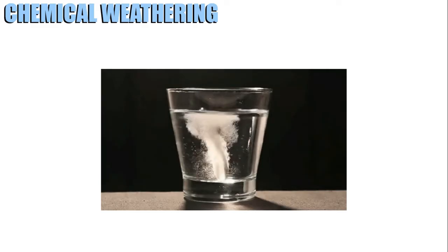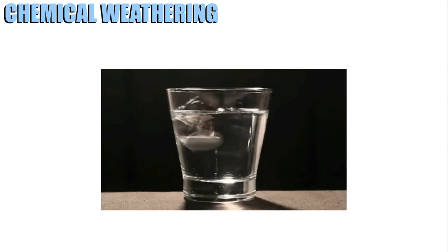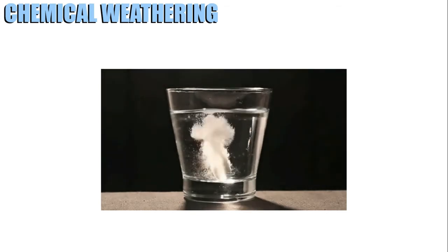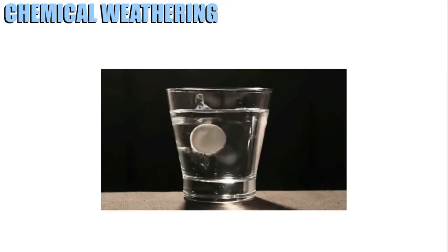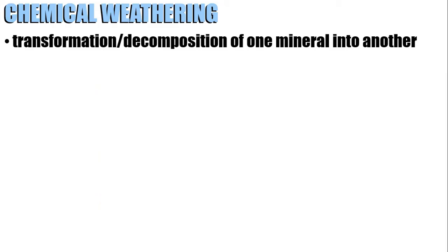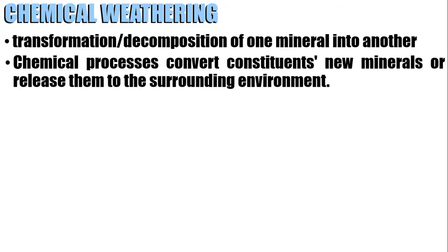Now let's go to chemical weathering. Going back to the tablet analogy — when you dissolve the tablet in water or an aqueous solution, the tablet reacts with water, yielding other substances. Similarly, when rocks undergo chemical weathering, they produce other substances. Chemical weathering is the transformation of one mineral into another. They are chemical processes which convert constituents into new material or release them to the surrounding. Take note that water is the most important agent of chemical weathering, and pure water is non-reactive.